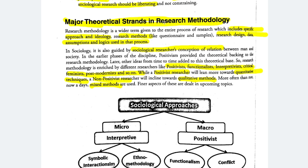Major theoretical strands in research methodology. First, let's see what happens in research methodology. There are all processes in one methodology — like making a research design, data assumptions, logics, etc. Whatever you do in the process of research, there is a terminology called research methodology. Now, what are the research methodologies of sociology? We are going to discuss that here.